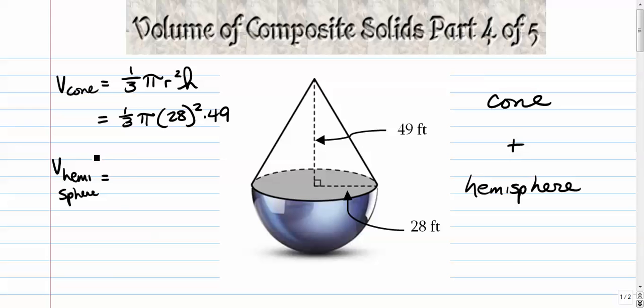Now the volume of a hemisphere is the volume of a sphere, 4 thirds pi r cubed, divided by 2. The hemisphere means half. Well that's actually equal to 2 thirds pi r cubed. It's a little bit of a simpler formula there. So 2 thirds pi times radius cubed. And we'll just add those two together. So this volume plus this volume.